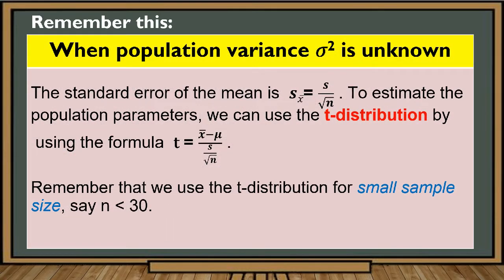When the population variance is unknown, remember that the standard error of the mean is given by the sample standard deviation divided by the square root of sample size n. To estimate the population parameters, we can use the t distribution by using the formula: t equals the sample mean minus the population mean, divided by the standard error of the mean for unknown population variance, which is the sample standard deviation divided by the square root of sample size n.